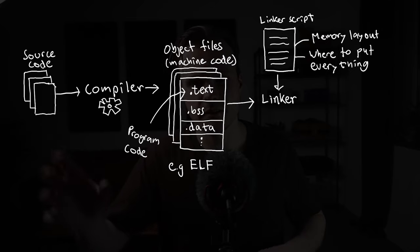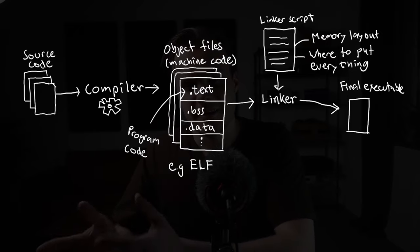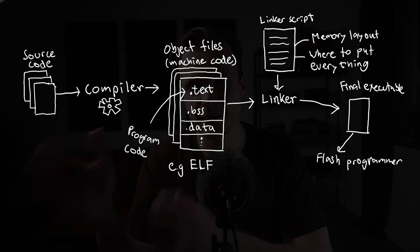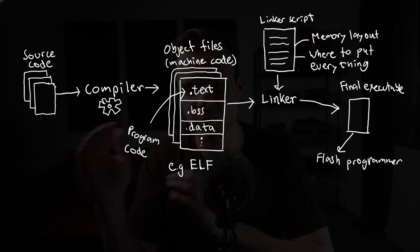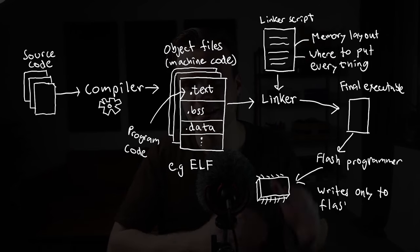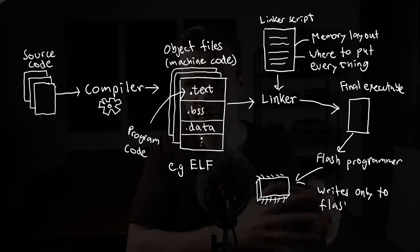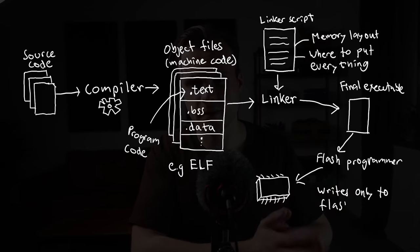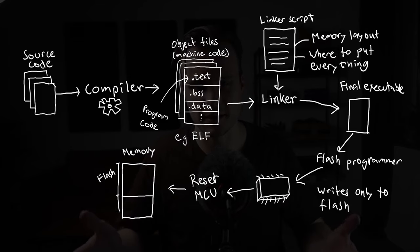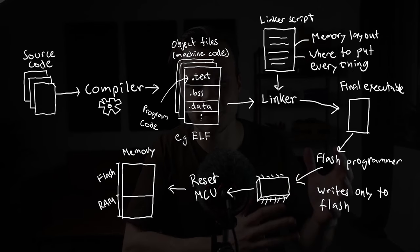The linker takes this linker script together with the object files and turns everything into a single final executable file. The flash programmer then takes the machine code of this executable and writes it to the flash memory, but it doesn't touch the RAM. The RAM is not touched until we reset the microcontroller and the CPU starts executing instructions. The first thing the CPU does when the microcontroller boots up — before the main function — is run a piece of code usually referred to as the startup code.